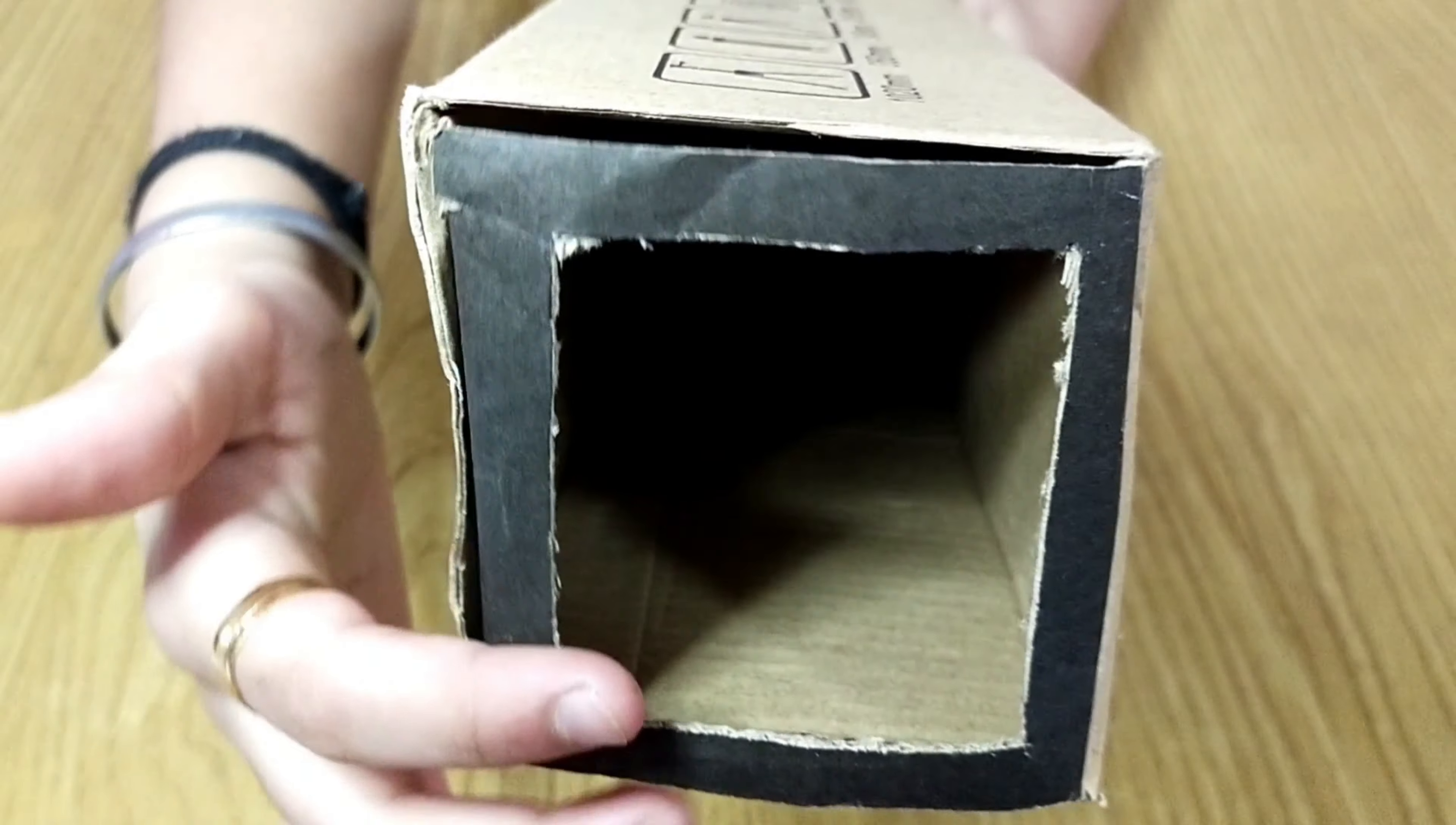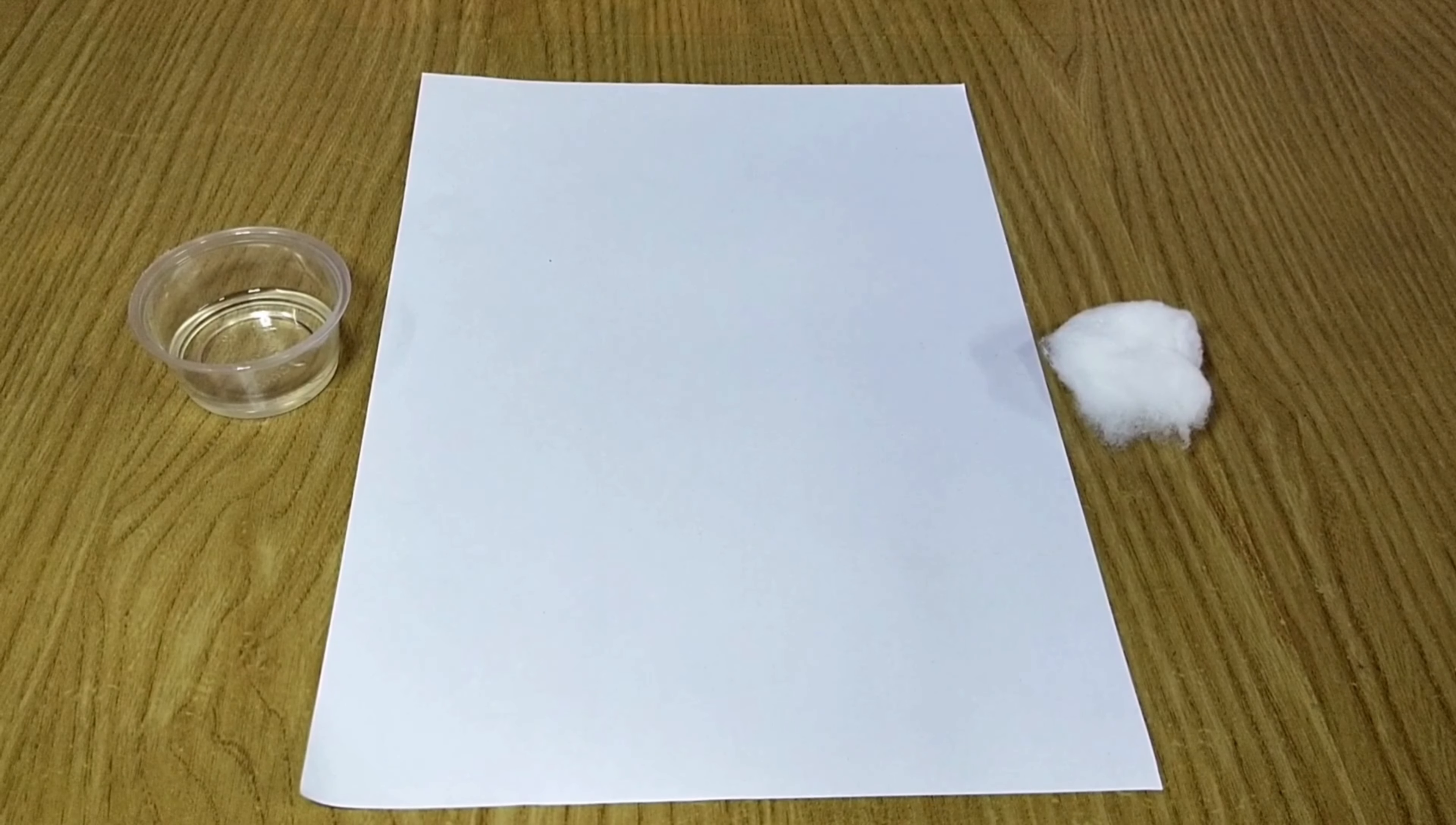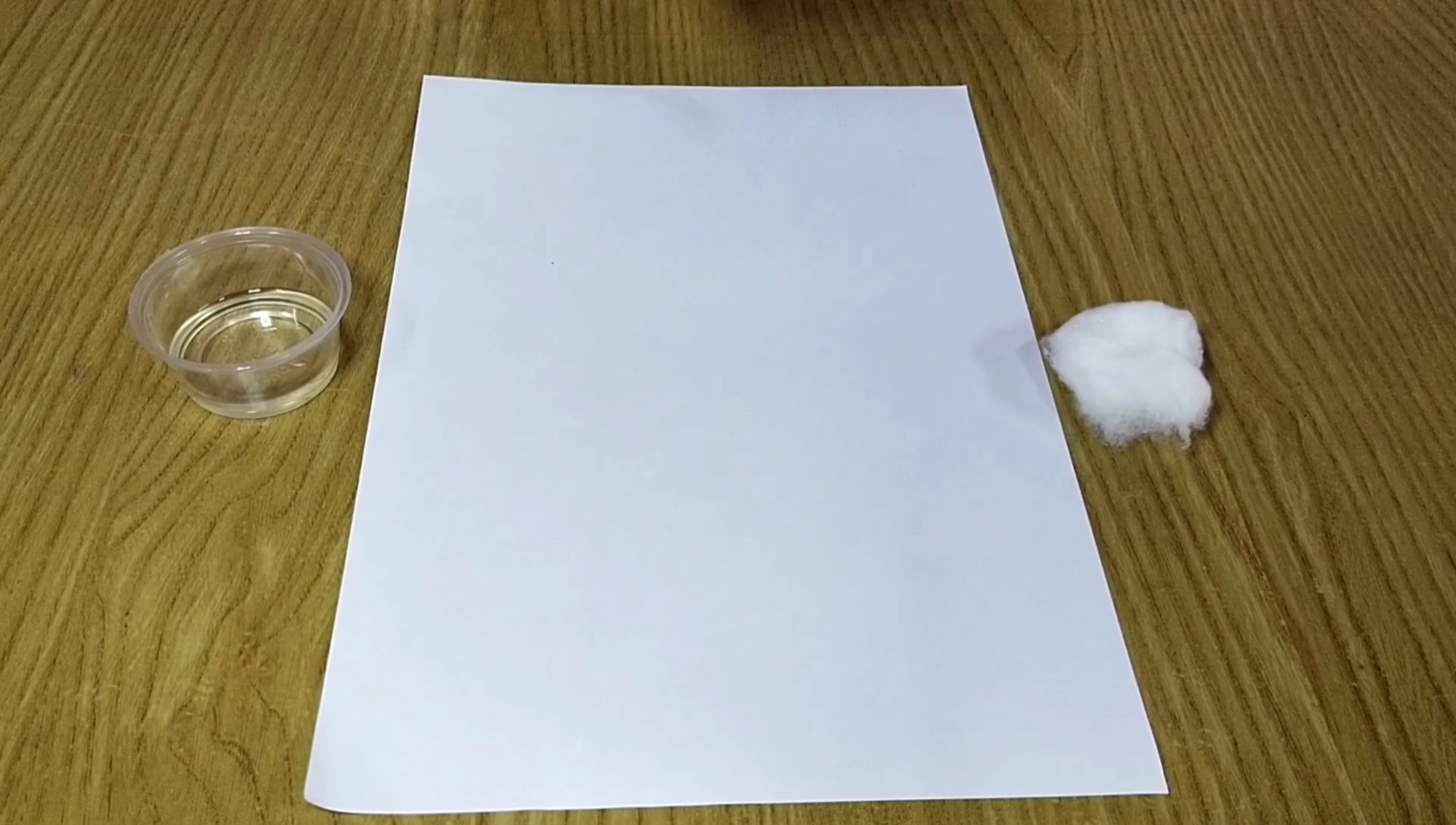Cover this open square in the box with a tracing paper. If you don't have a tracing paper, don't worry, we can make it. For that we need white paper, cotton, and oil.